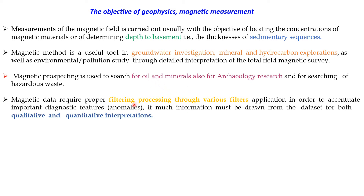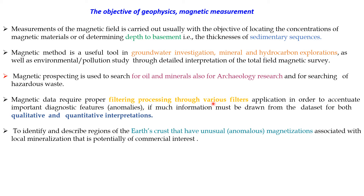Proper filtering is required on the raw data. Without proper filtering and diagnostic procedures, you must accentuate the anomalies by removing noise to get maximum information. This is done through qualitative and quantitative interpretation. We have to identify regions of the Earth's crust with anomalous magnetization, and that magnetization must be associated with local mineralization of commercial interest for the benefit of society.